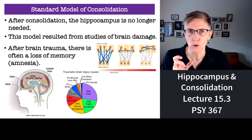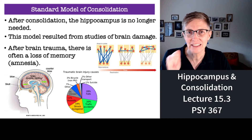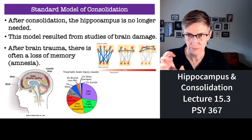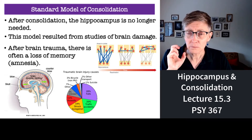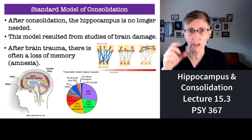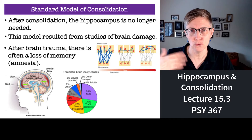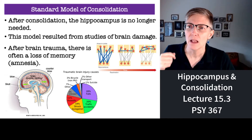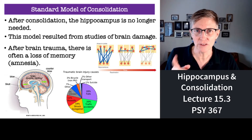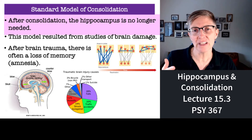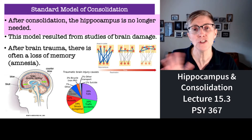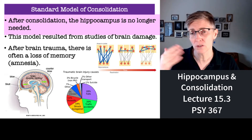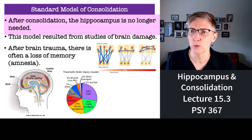You need your hippocampus originally, when you're first starting to consolidate new information. According to the standard theory, after consolidation has taken place, you don't need the hippocampus anymore because it's all stored in your cortex — you don't need the translator, if you will.